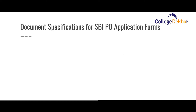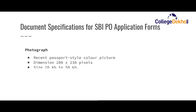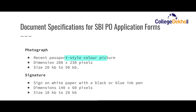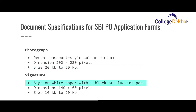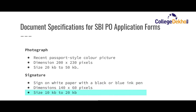Now let us look at the documents required for the SBI PO application form and their specifications. The documents required are a scanned photograph and scanned signature. The photograph should be a recent passport size color picture with dimensions 200 x 230 pixels and size between 20 to 50 KB. The signature should be on white paper with black or blue ink, with dimensions 114 x 60 pixels and size between 10 to 20 KB.